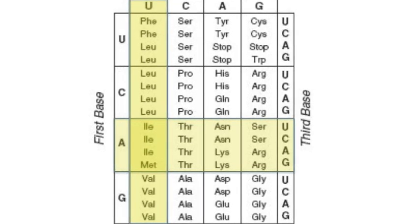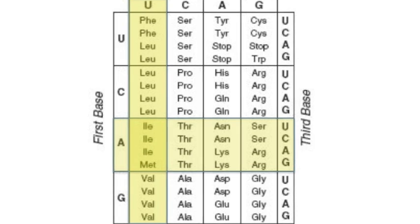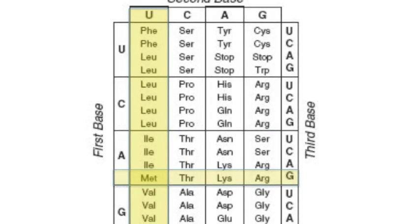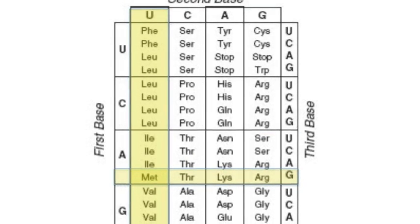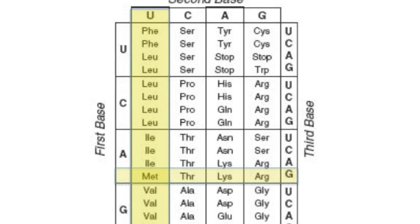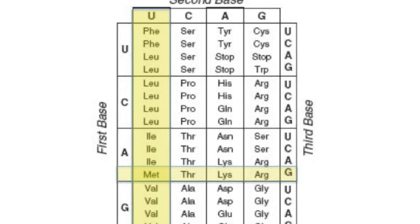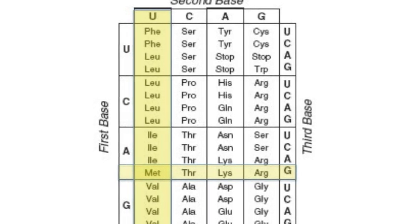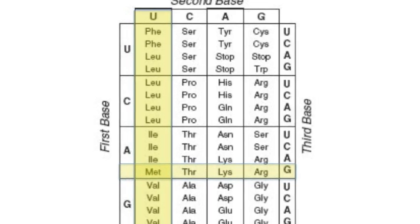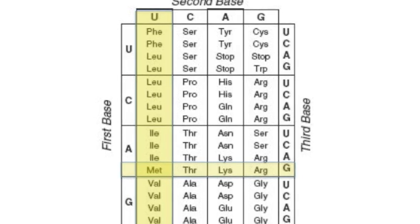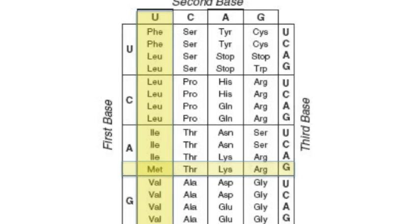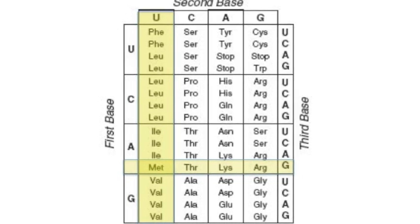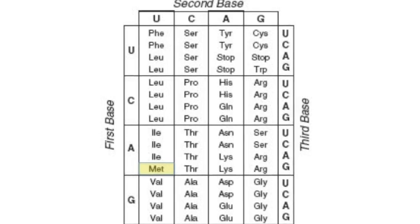In order to find out which one of the four you'll need to look carefully at the far right where it says third base, where the three intersect. The A from the left, the U from the top, and the G from the right — you will find the amino acid that the messenger RNA is coding for.